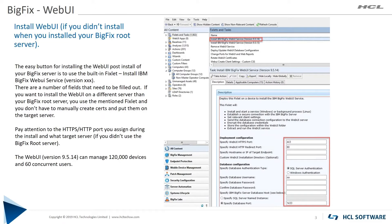If you didn't install the WebUI when you installed BigFix, or if you want to move it to a standalone server, you can run the fixlet to remove the WebUI service from your BigFix server, then run the other fixlet to install it on the server you decide. You'll need to answer a few questions: the ports, the host name, an optional installation directory, database credentials, and whether to use server or Windows authentication. You also specify the database host name and the port it's listening on, and then the fixlet will go ahead and install the BigFix WebUI.